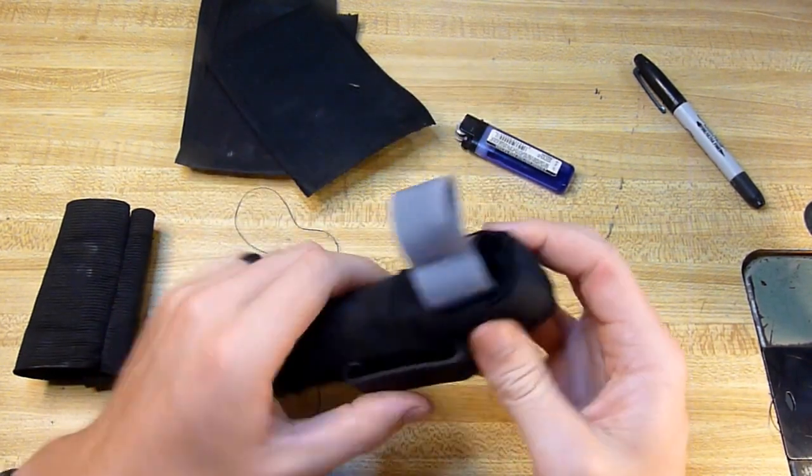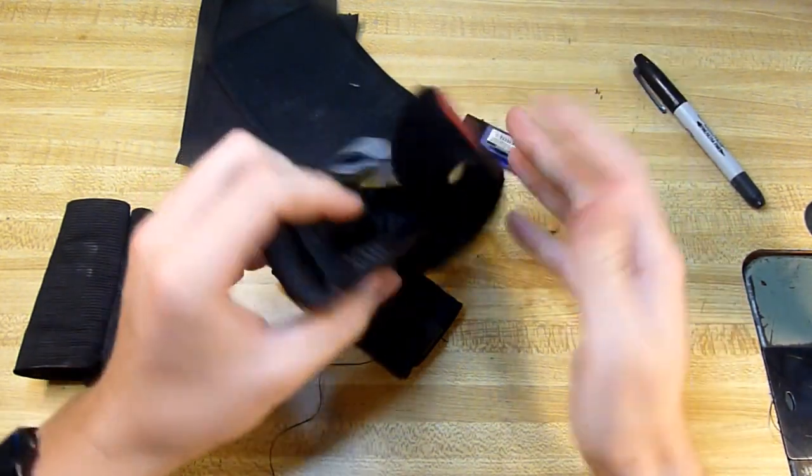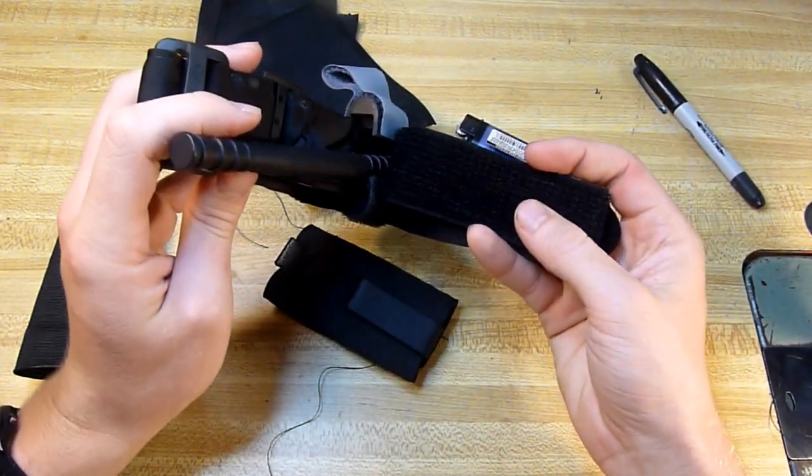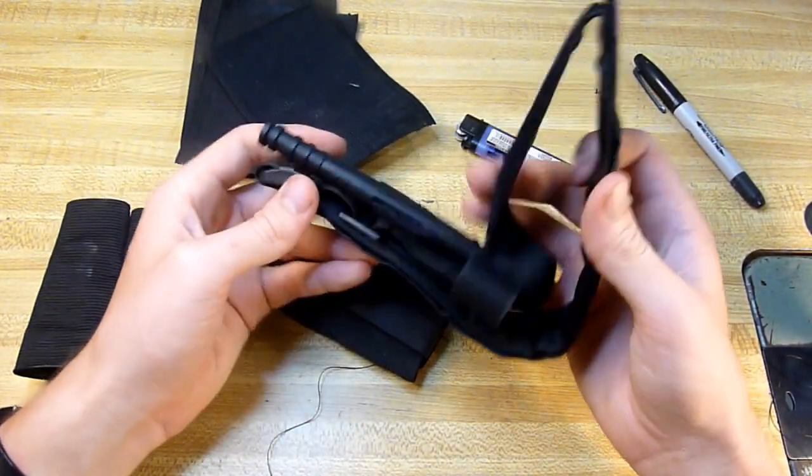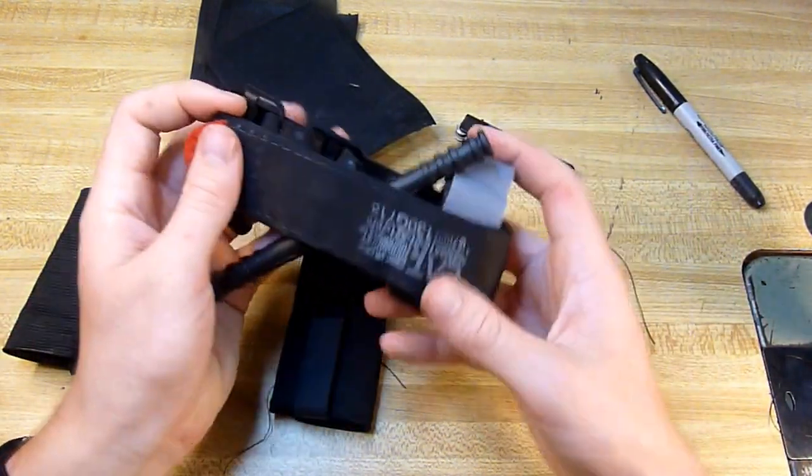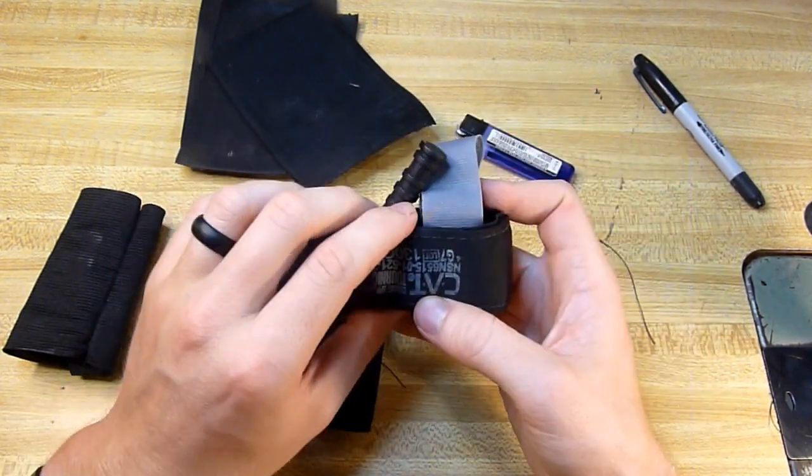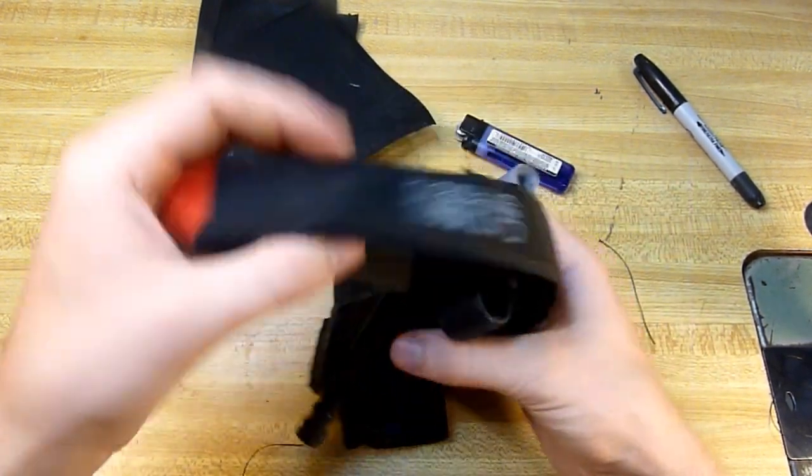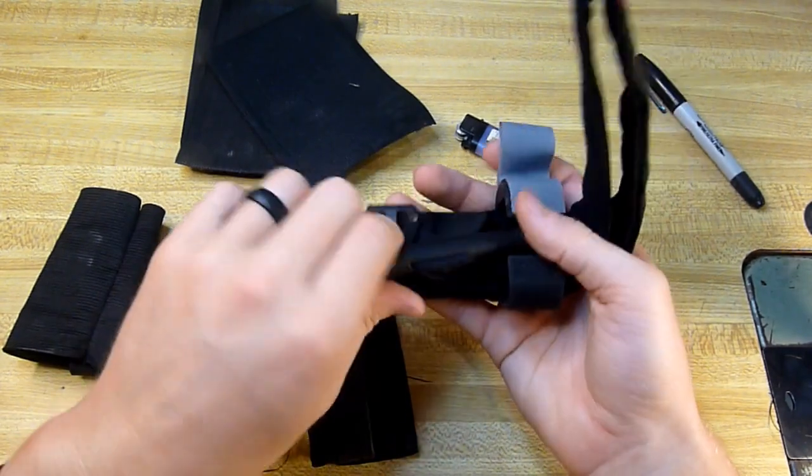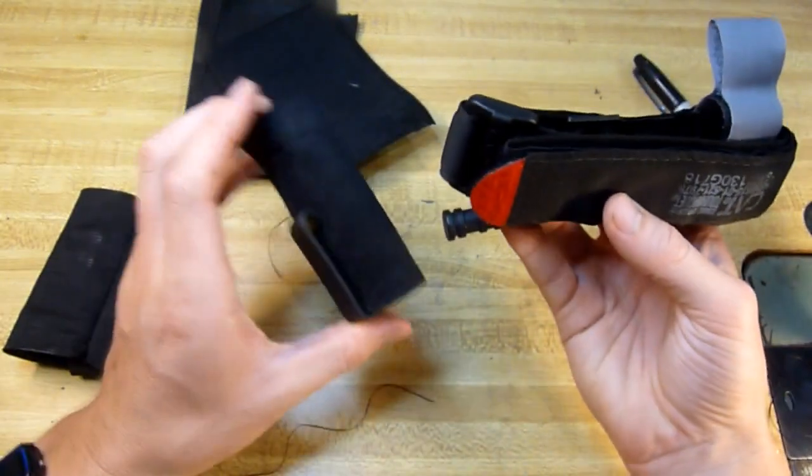One thing to remember is that the Velcro of the tourniquet will kind of grab the inside of the elastic, so you can kind of see how I have mine folded up here to where there's no Velcro facing outwards other than just a little bit right up here, but that's outside of the elastic. So fold it up so not much Velcro is going to be sticking to the inside of your holder, and you should be good to go.